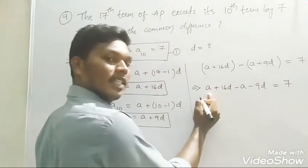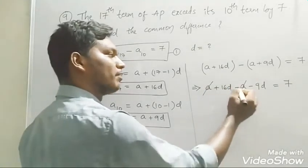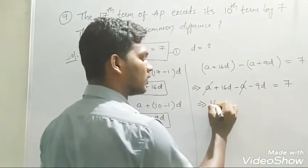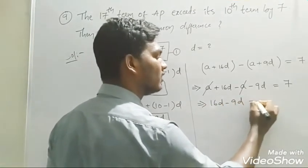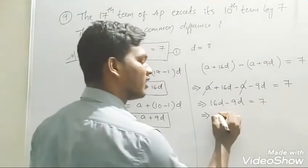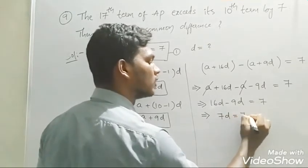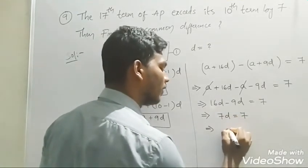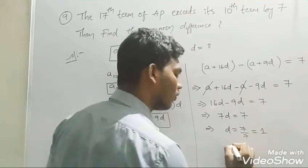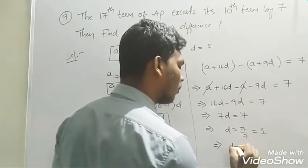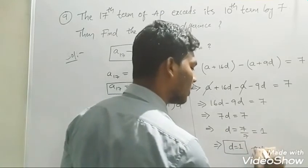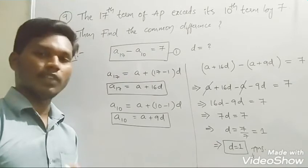The 'a' terms cancel out, so we have 16d minus 9d equals 7. That gives us 7d equals 7, and therefore d equals 1. So the common difference is d equals 1.